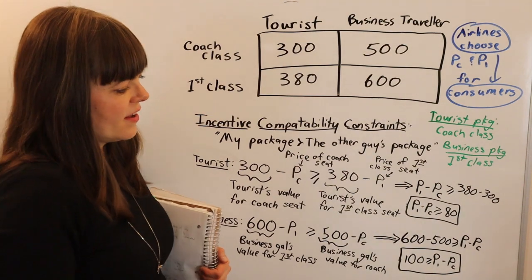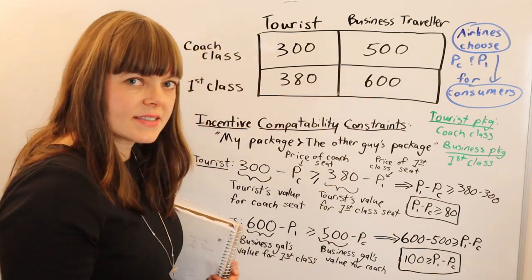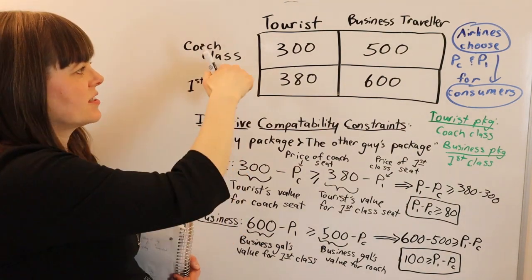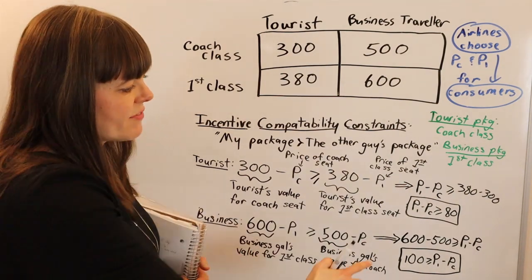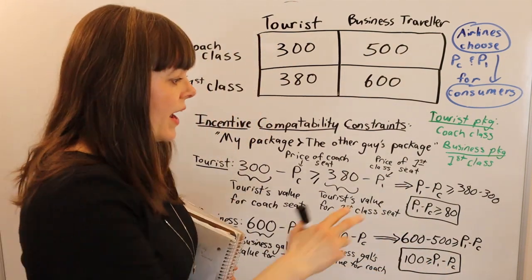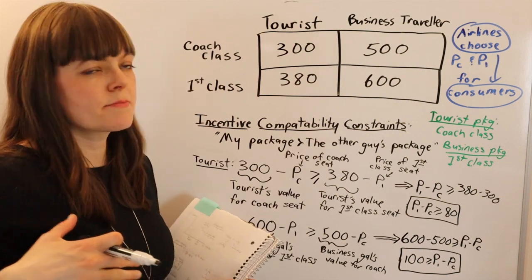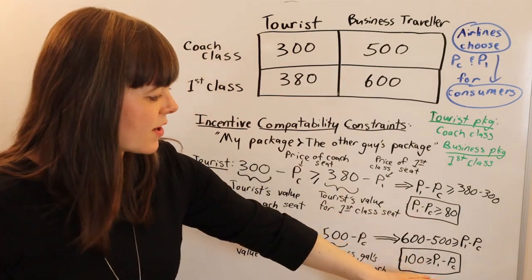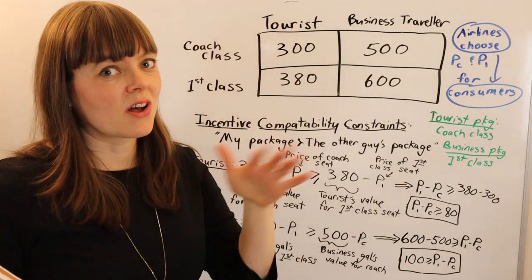So the price differential between first class and coach needs to be less than $100, because if it's not, business class people won't take first class seats — they'll switch to coach. We now have a range: the price differential between the two tickets needs to be somewhere between $80 and $100. That's helpful, but it's not complete information if we want to actually price the tickets. So let's keep these two inequalities in mind and move on to the participation constraints, which will solve the problem.